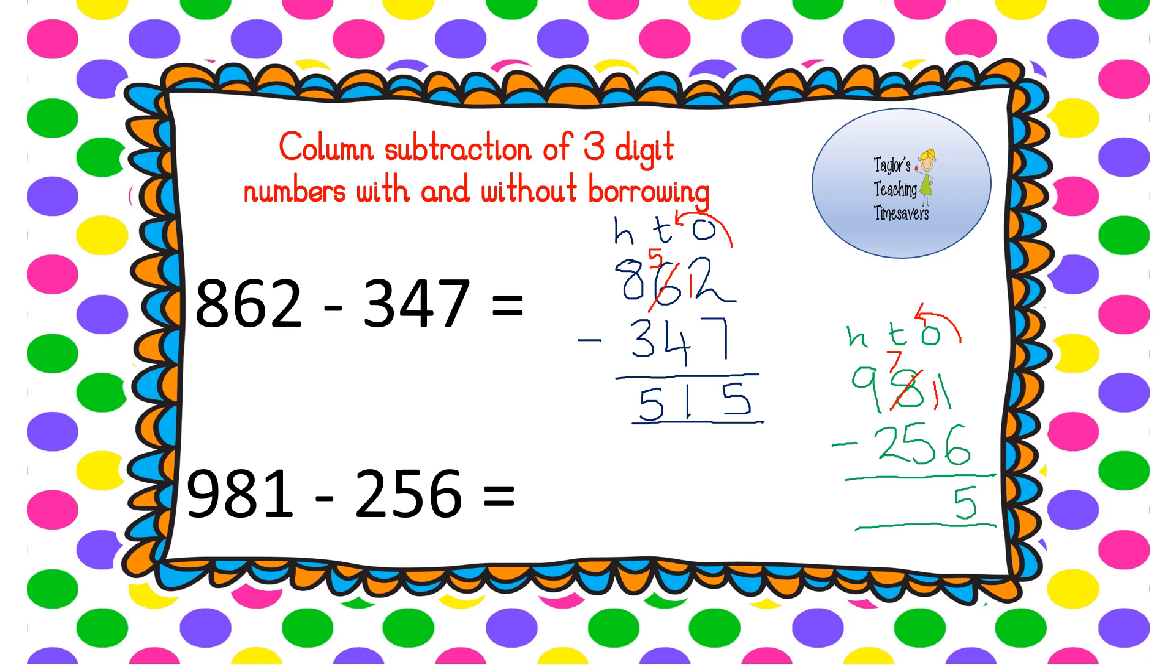Which is 5. It's 70 take away 50 which is 20, and it's 900 take away 200 which is 700.